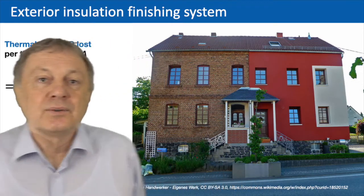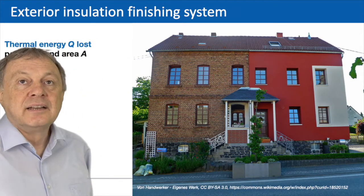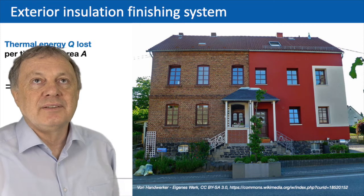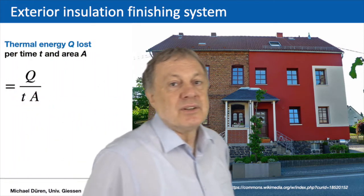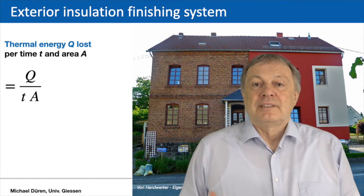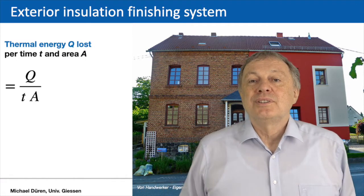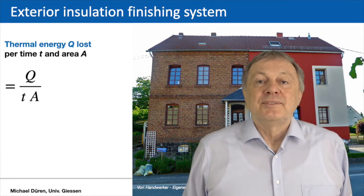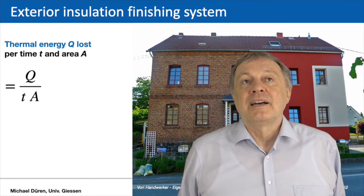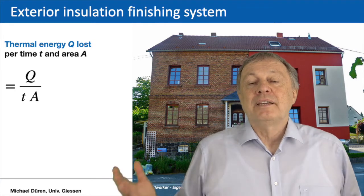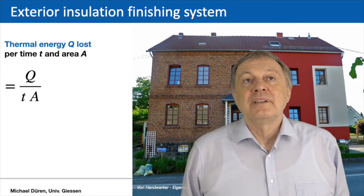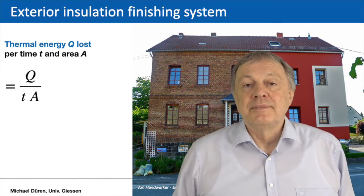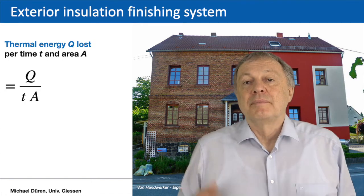Here's an example of an old house that has been insulated on one side. On the left you see the old bricks; on the right, the house with an exterior insulation finishing system. Imagine your house is at 20 degrees and you stop heating as it gets colder in winter. The additional energy needed, Q per unit time, also depends on how big your house is. The energy loss through the wall or roof is Q divided by time and area, giving a specific energy loss you can calculate from the insulation.